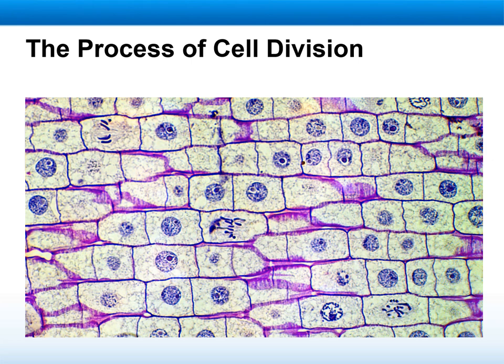Some cells, like nervous cells, don't go through cell division. They are born from stem cells, get differentiated, and they end that way — they don't go through cell division.